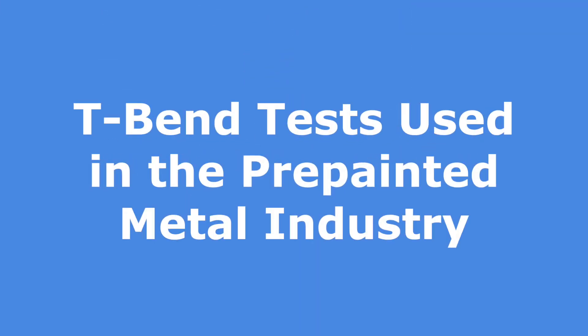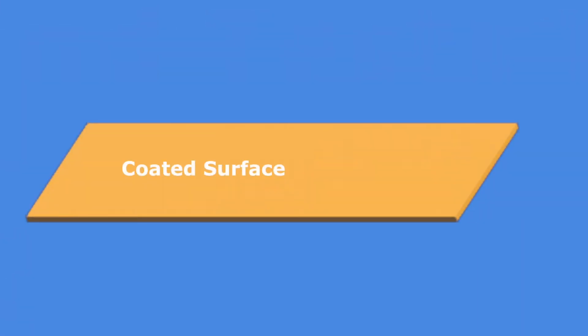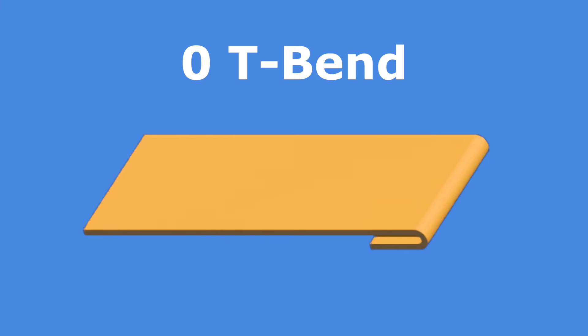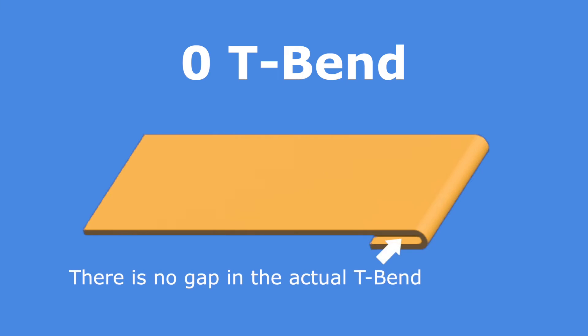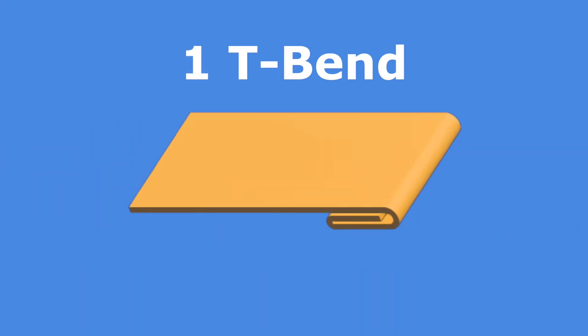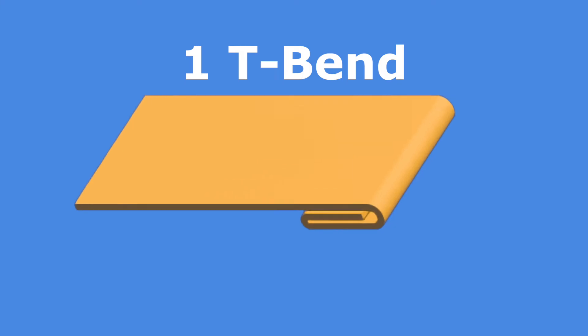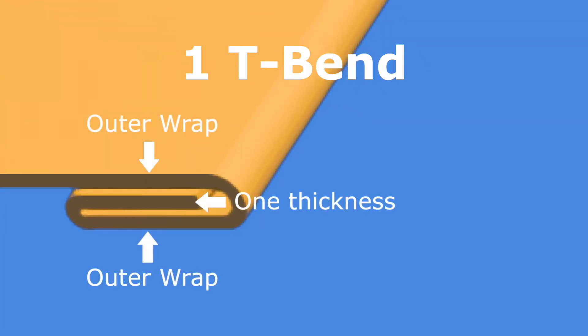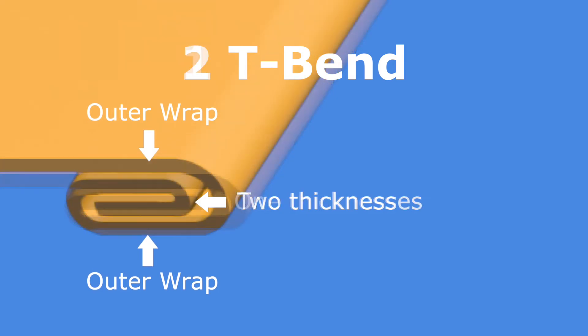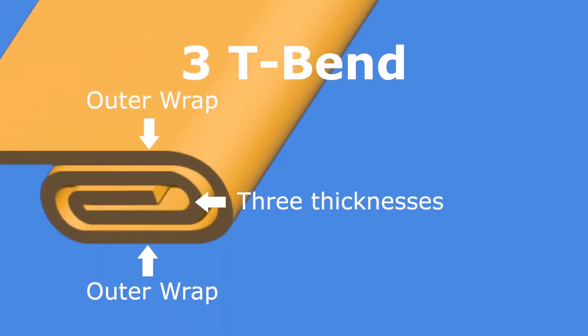Now that you've learned what happens when metal is bent, let's discuss the T-bend tests used in the pre-painted metal industry. Although there are several techniques to perform a T-bend test, the goal in all cases is to wrap a layer of metal over on itself, as shown here. A zero T-bend is one where the metal is bent over onto itself. In reality, the bend is compressed in a vice or a press such that no gap exists. To produce a one T-bend, the metal is bent over the zero T-bend; there is one thickness of metal between the outer wraps. A two T-bend has two thicknesses of metal, a three T-bend has three thicknesses, etc.